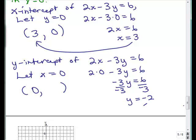y is negative 2. That's the value. When x was 0, y was negative 2. So, what did we get?